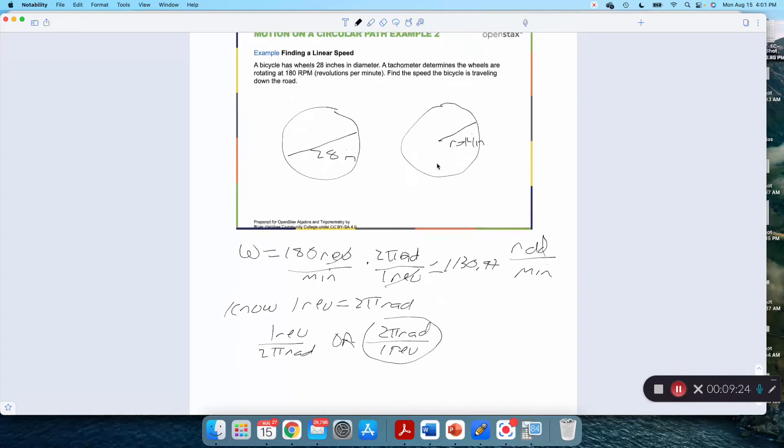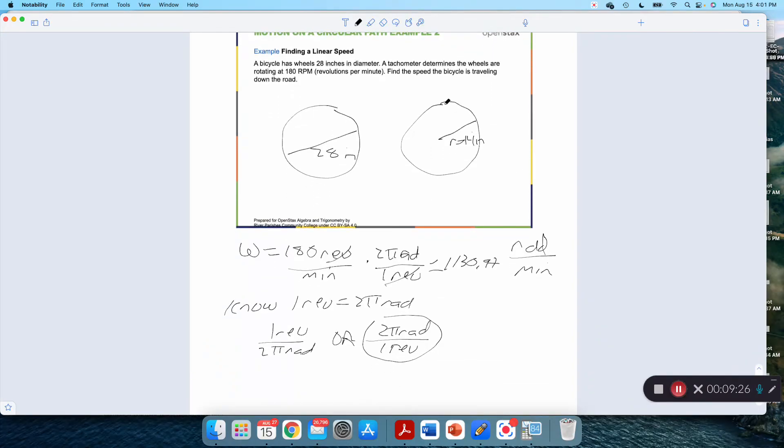Now I want to find the linear speed. Now this one we got to think about. Think about a bicycle traveling down the road. The speed at which a point here, so imagine this point right here on the bicycle tire, the speed that it's moving around the circle is exactly the same speed that the bike is traveling down the road. Because this is the point of contact right there, the speed that that point is moving this way is the same speed the bike is moving that way.